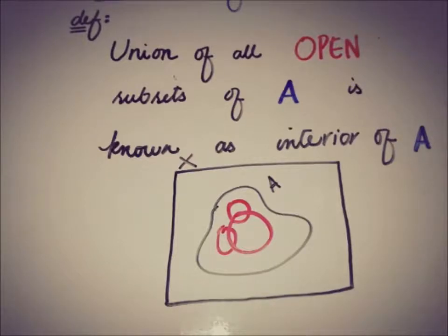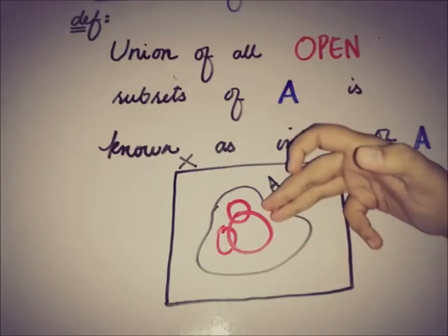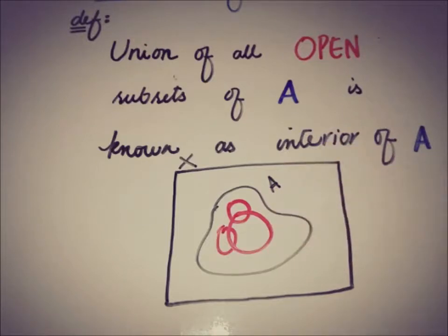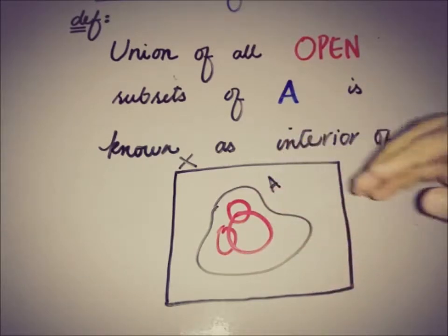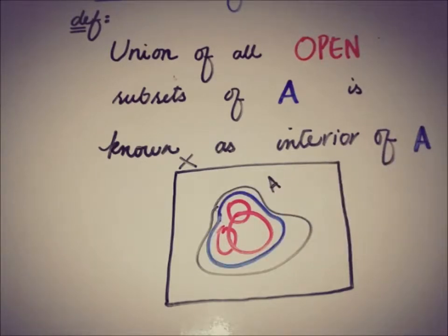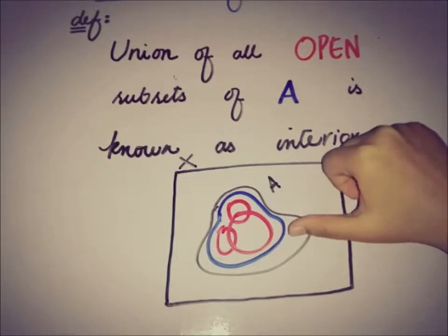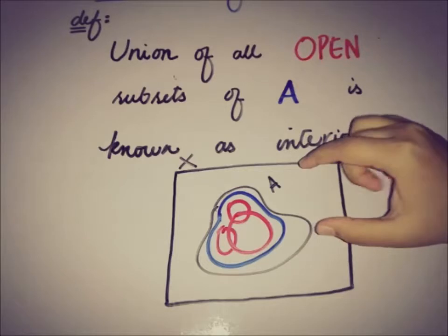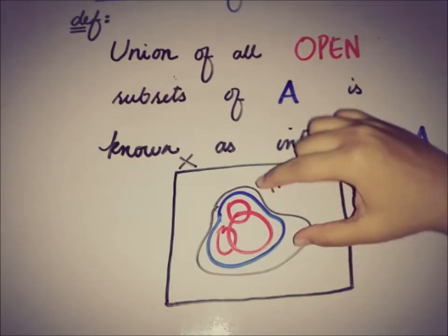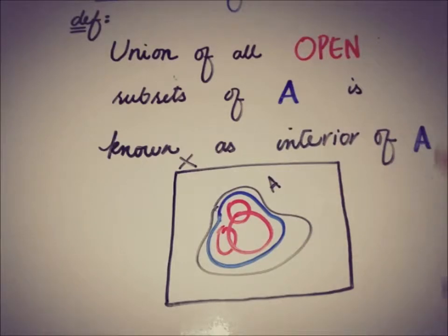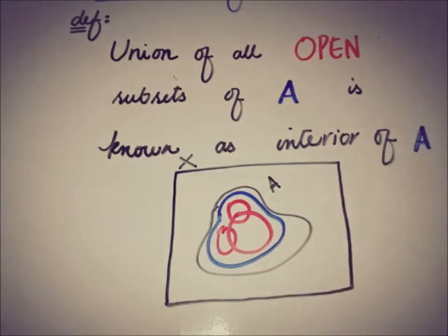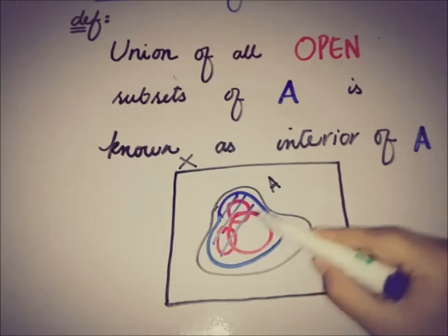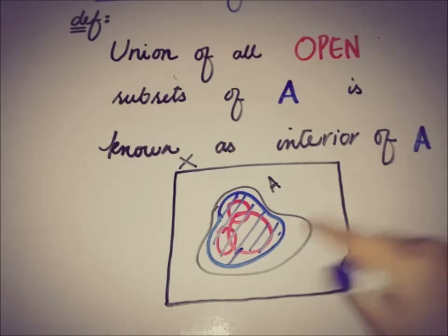The name 'subset of A' implies that these open sets are strictly in A. By definition, the interior of A is the union of all open subsets of A. If we take the union of all these subsets of A, this union must also be contained in A. The blue area denotes the union of open subsets of A, and it is an obvious result that this union is contained in A. So the interior of A — this blue area — is the subset of A.